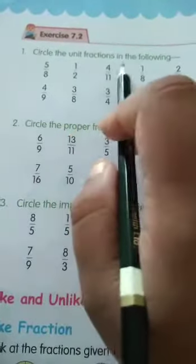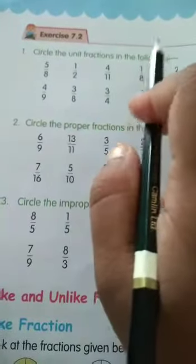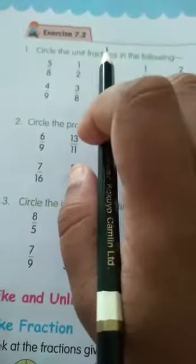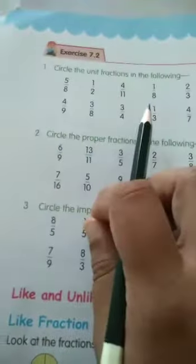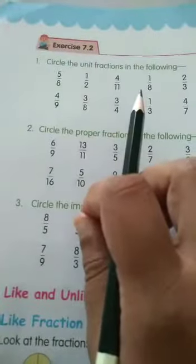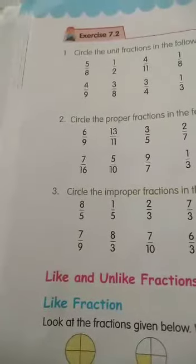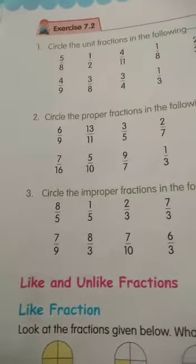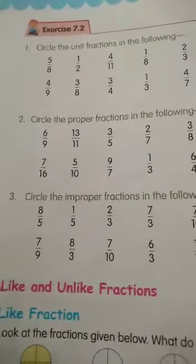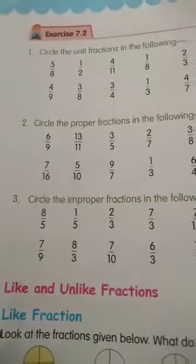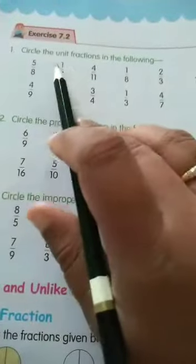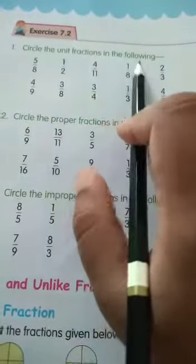First bit: circle the unit fractions in the following. So in yesterday's class I gave the unit fraction definition. Unit fraction is nothing but a fraction with the numerator 1. So a fraction with the numerator 1 is called a unit fraction. So here, we have to circle the unit fractions in the following.